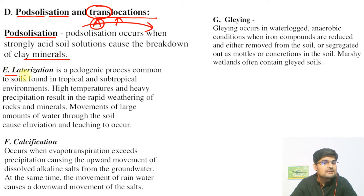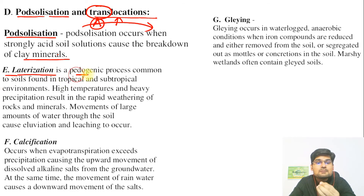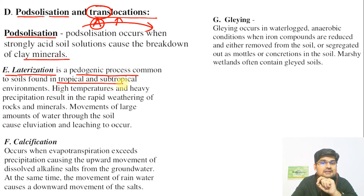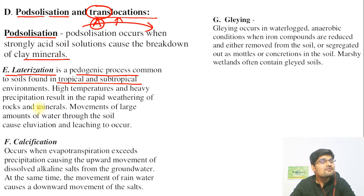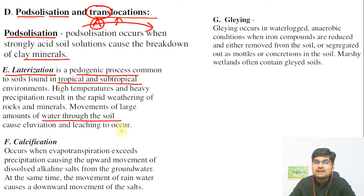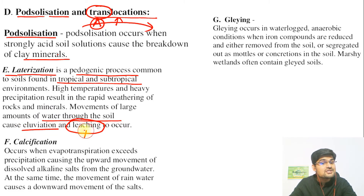The fifth process is laterization, an important soil-forming process also called a pedogenic process. It is common in tropical and subtropical environments because they have high temperatures and heavy precipitation. Where you have high temperatures and heavy precipitation, there is rapid weathering of rocks and minerals, and the movement of large amounts of water through the soil leads to eluviation — that is, washing away and leaching — which is where the laterization process is important.